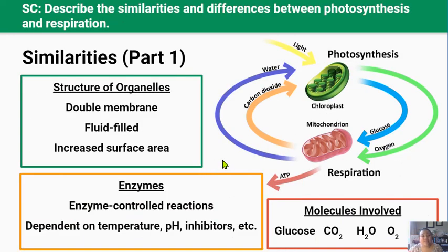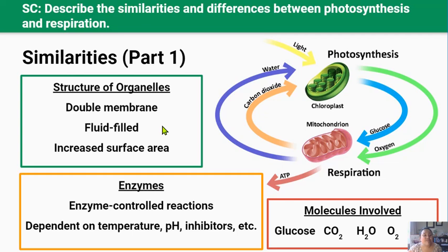Finally, let's go through the similarities and differences between photosynthesis and respiration. There are five important similarities. Similarity one — the structure of organelles: mitochondria and chloroplasts both have double membranes filled with a nutrient-rich fluid — the stroma in chloroplasts and the matrix in mitochondria. They also both contain structures with a high surface area to maximize space available for reactions — the flattened stacks of thylakoid membranes in chloroplasts, and the highly folded cristae of the inner membrane in mitochondria.